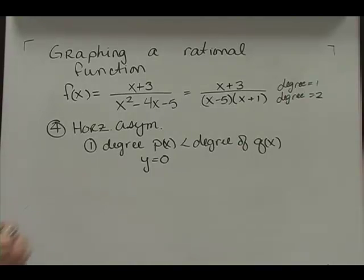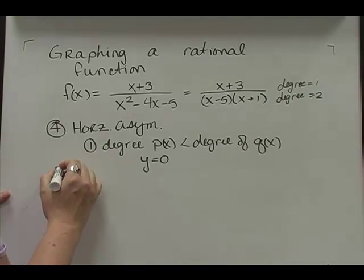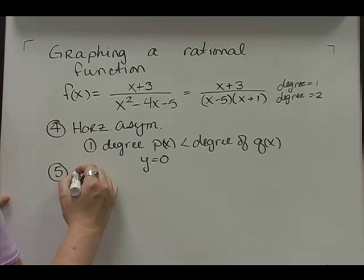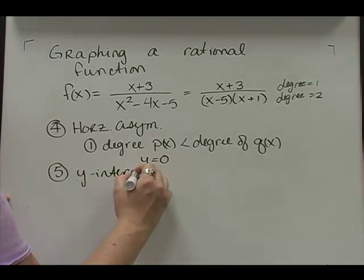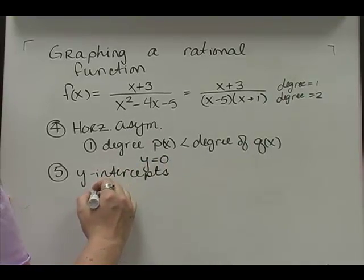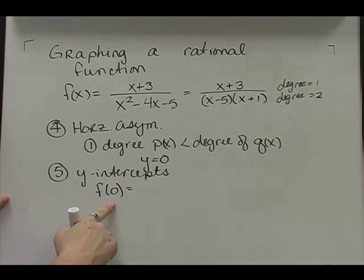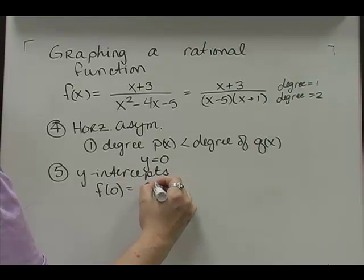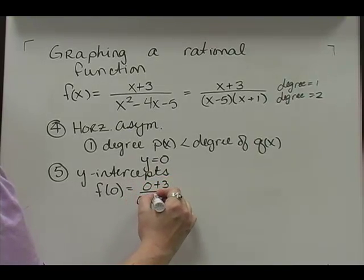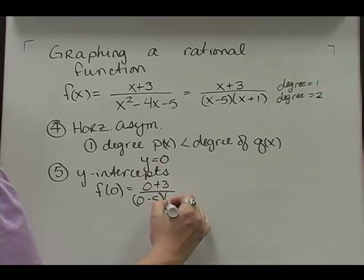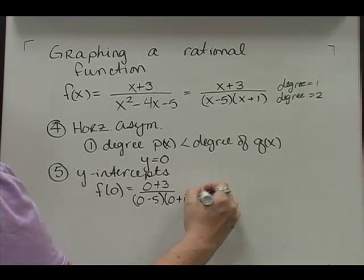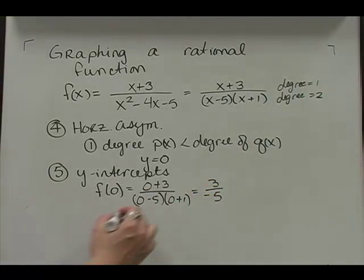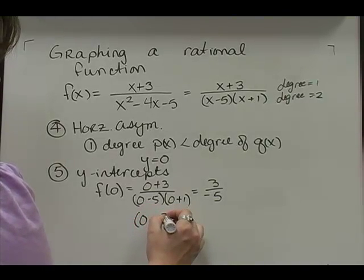After we find the horizontal asymptote, the next thing we want to do is find where the function crosses. My y-intercept for this function is going to be at zero, negative three-fifths.